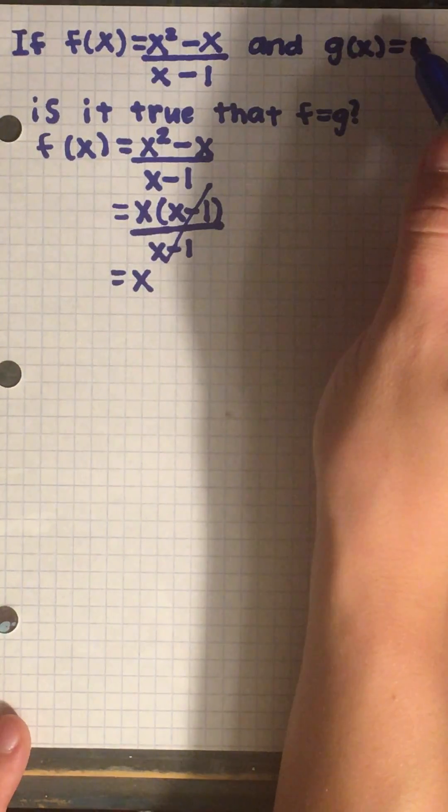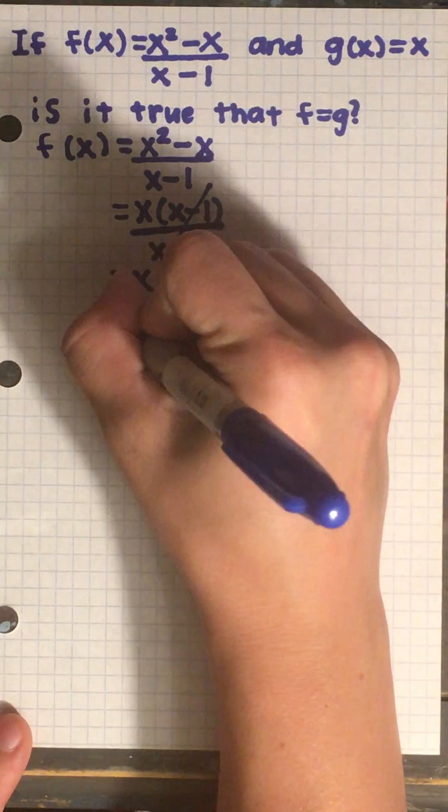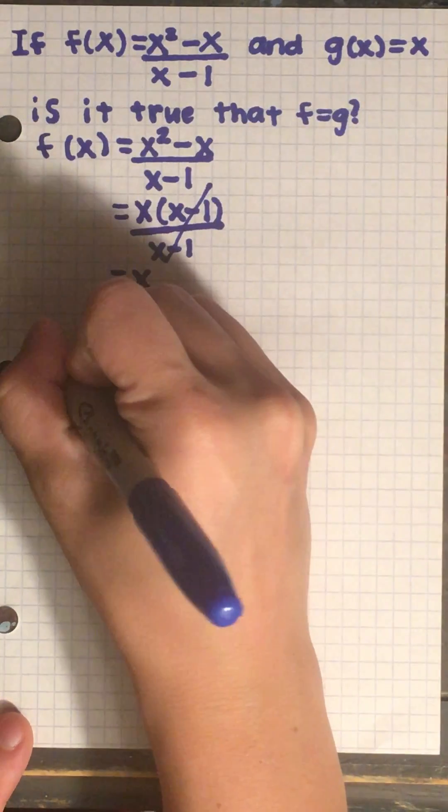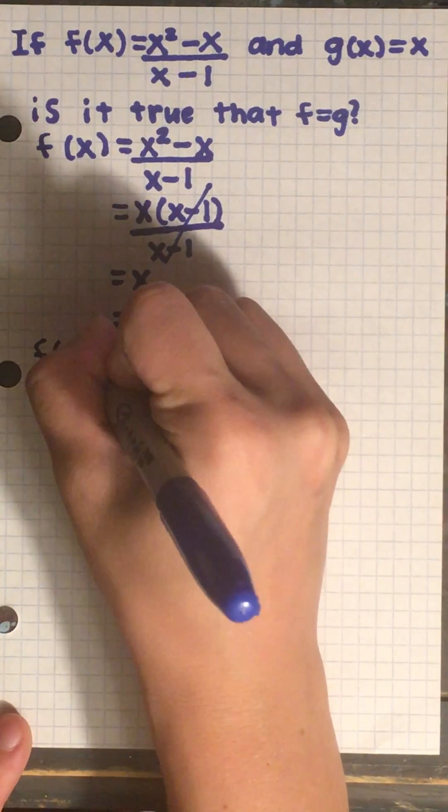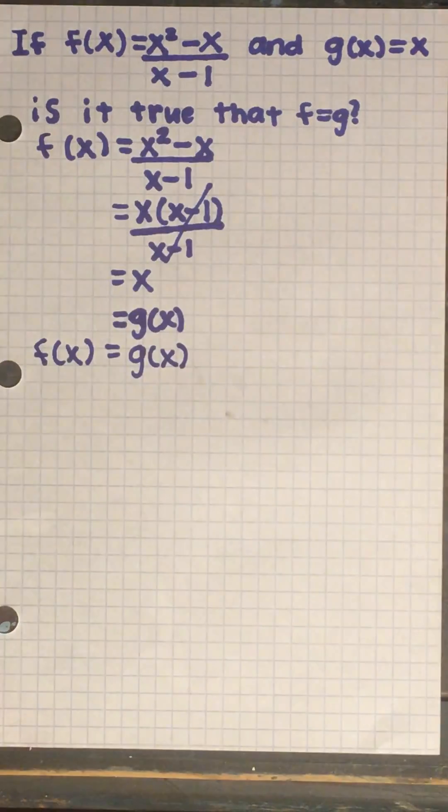Now we can substitute our g of x in. Because g of x is equal to x, we can say that this is equal to g of x. Therefore, f of x is equal to g of x, hence proving that this statement is true.